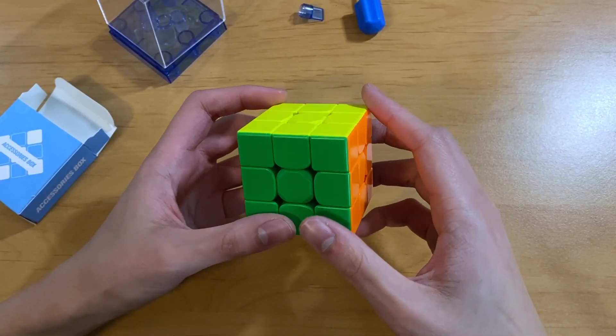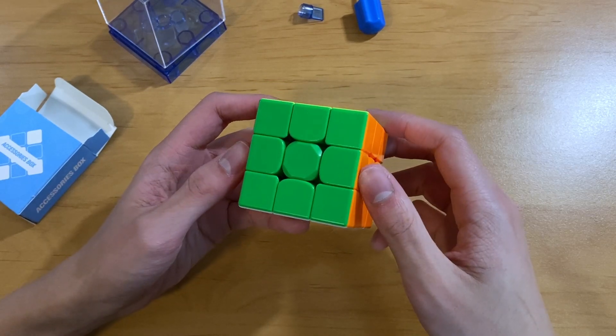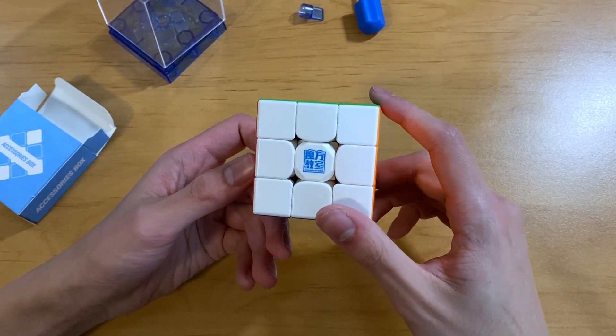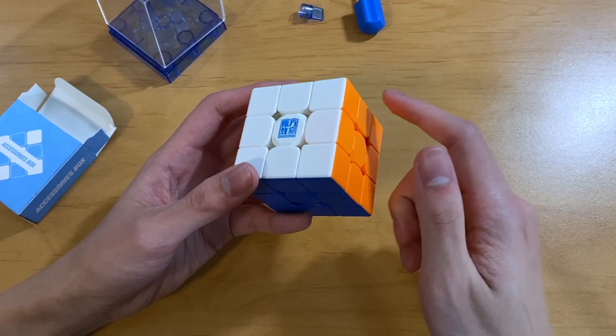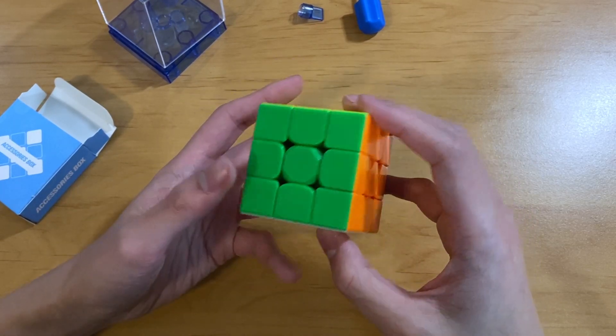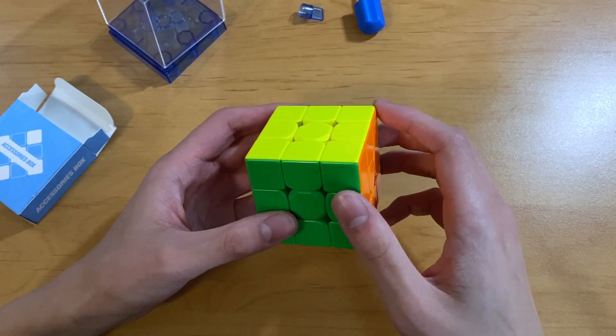From what I've heard, the Super RS3M is only a little bit better than the RS3M 2021, and my RS3M 2021 is already corner core magged, so I'm not sure if this is actually going to be any better, but it'll be interesting to try.